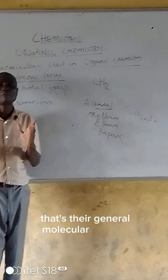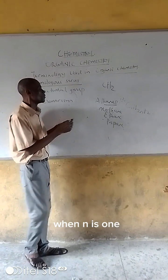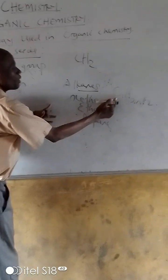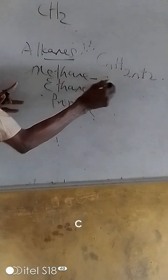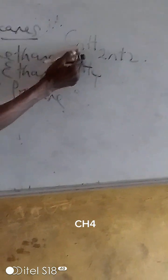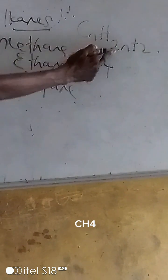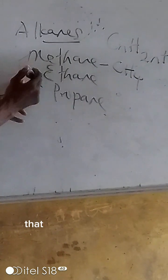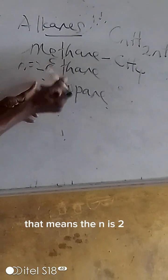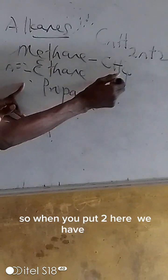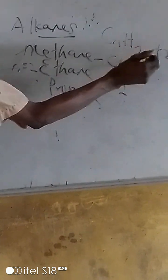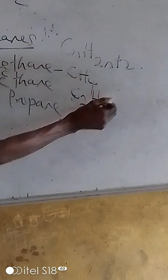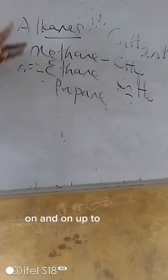When N is 1, if you put 1 here, we are going to get CH4. C1, 1 times 2 is 2, plus 2 gives us 4. Likewise for ethane, N is 2. If you put 2 here, we are going to have C2H6: 2 times 2 is 4, plus 2 is 6. And on and on for propane and the rest.